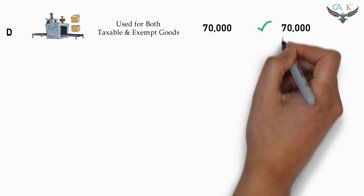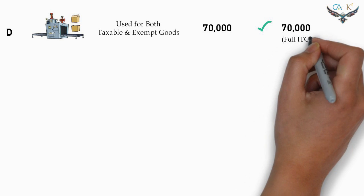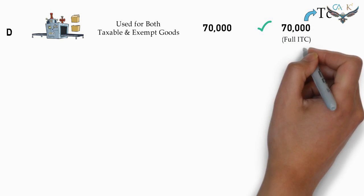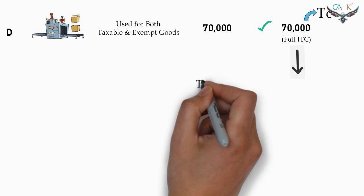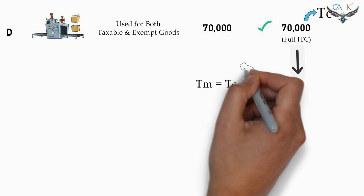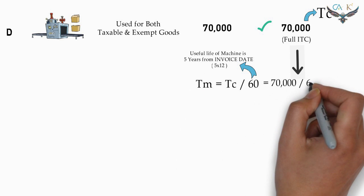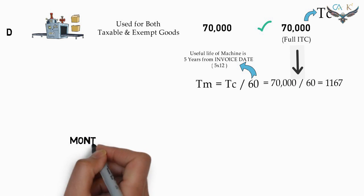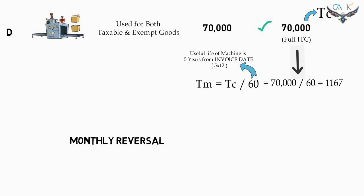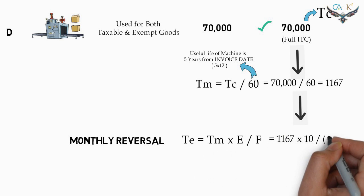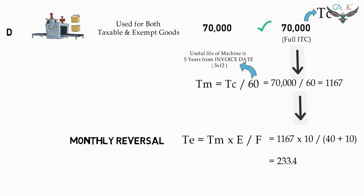But since Machine D is a common capital asset used for both taxable as well as exempt goods, the monthly reversal has to be calculated. The entire GST amount of Rs. 70,000 belonging to the common capital asset is denoted as TC. TM is calculated by dividing TC by 60, since the useful life of machinery is taken as 5 years as per GST rules. In this example, TM = 70,000 ÷ 60 = 1,167. The monthly reversal, denoted as TE, is arrived at by multiplying TM with exempt turnover divided by total turnover. Assuming exempt turnover is 10 and total turnover is 50, the monthly reversal comes to 233.4.